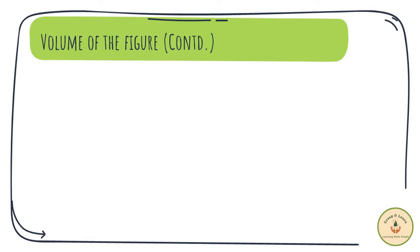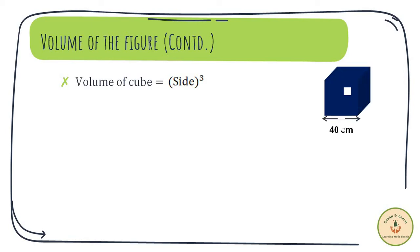The volume of a cube is equal to side cubed. It is given that the side of this cube is 40 cm, so the volume of this cube becomes equal to 40³, which is equal to 64,000 cm³.